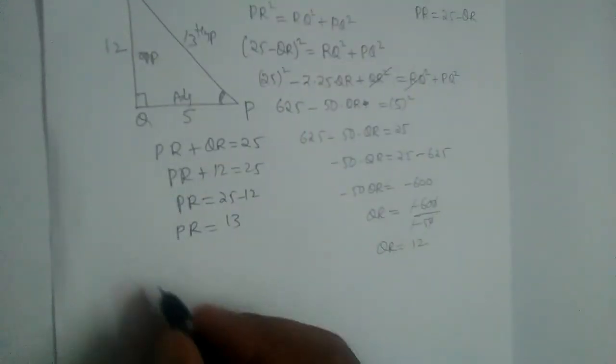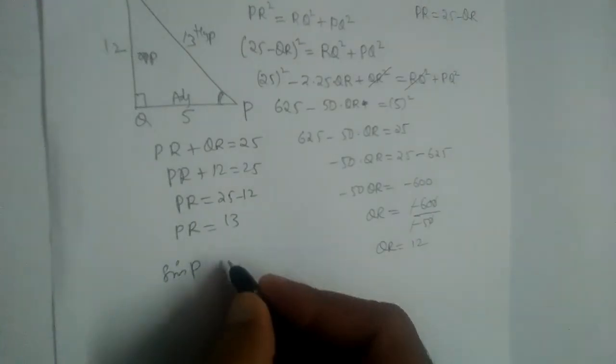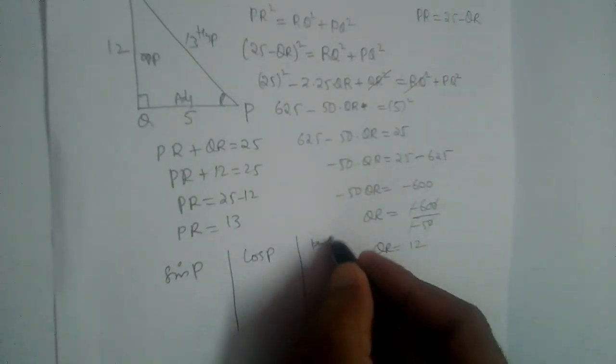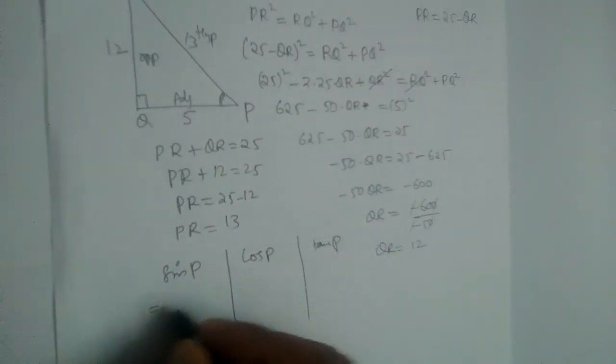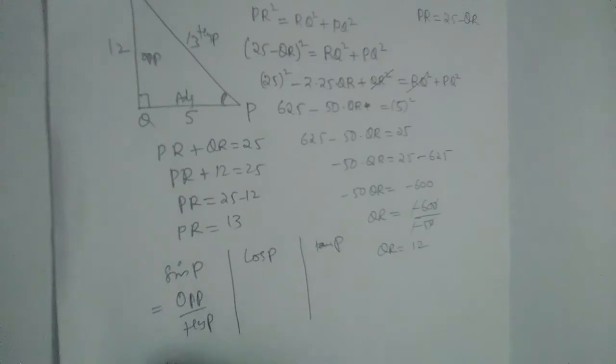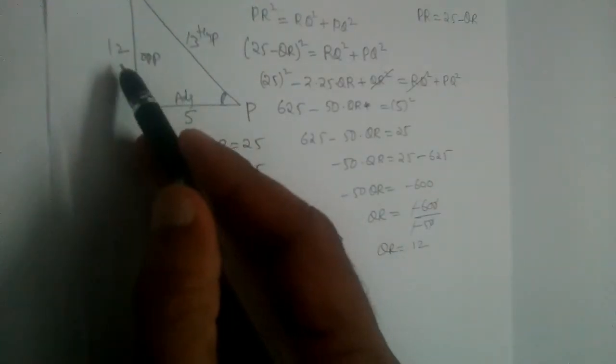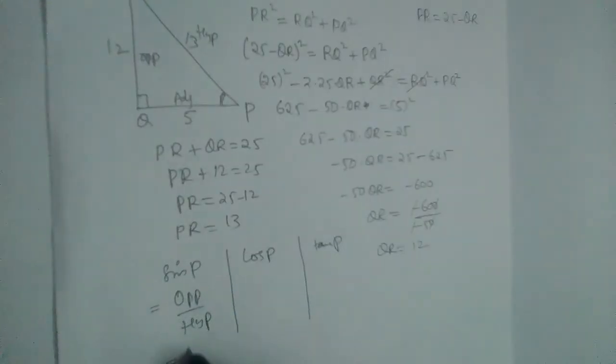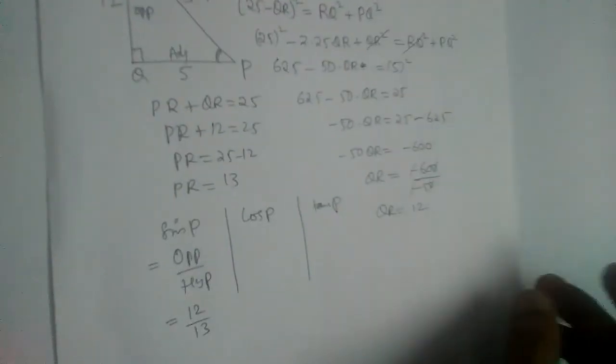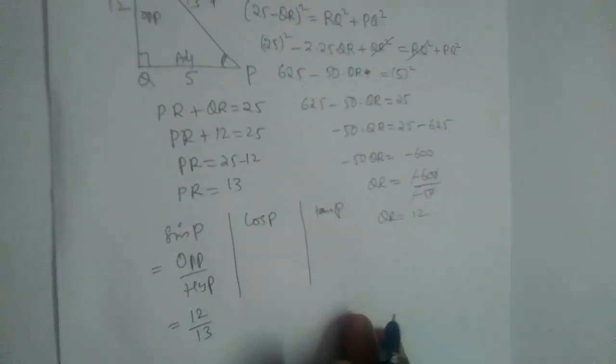We need sin P, we need cos P and we need tan P. What is sine formula? Opposite by hypotenuse. What is the opposite side here? 12. Hypotenuse 13. So it is 12 by 13. So sin P is 12/13.